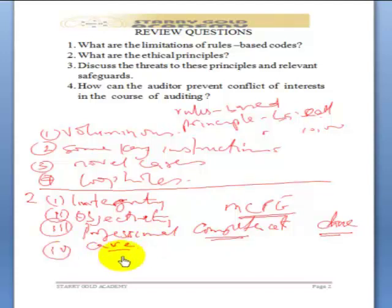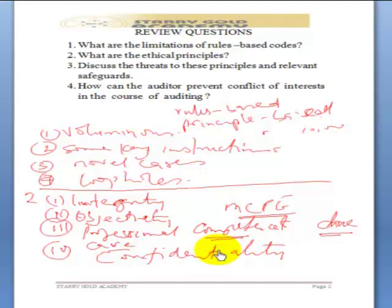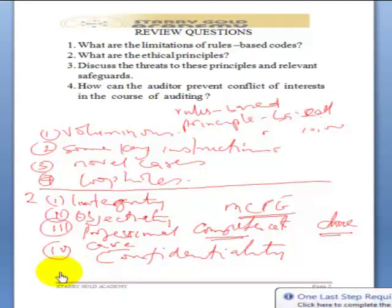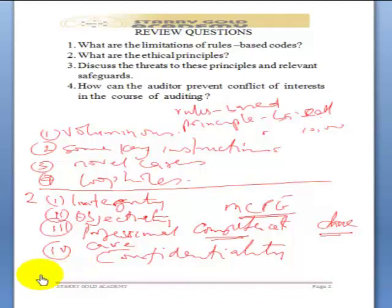Number four — confidentiality. The auditor is supposed to work, and as you are working, you are going to be coming in contact with so many things that are highly sensitive and secretive in the client's business. You are not supposed to divulge this information without authorization. You are not supposed to use this information for your own benefit.